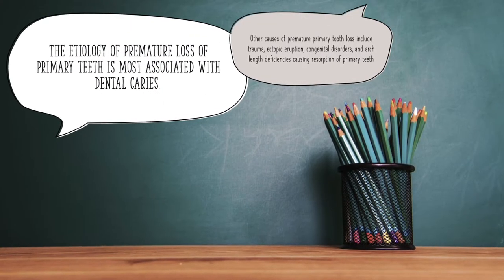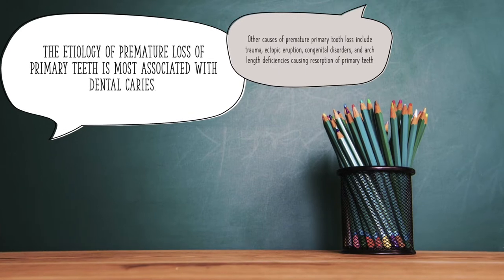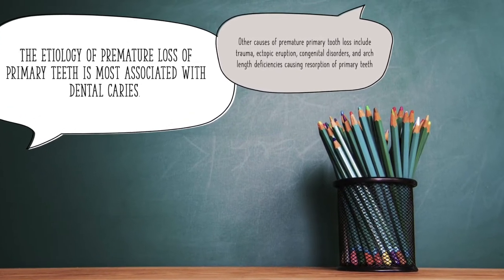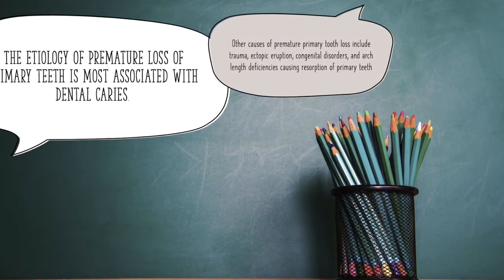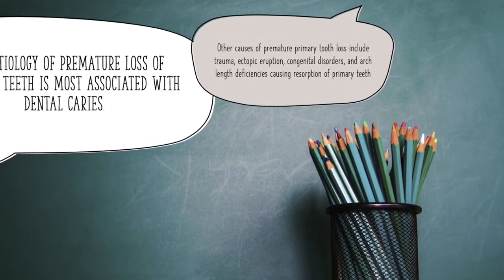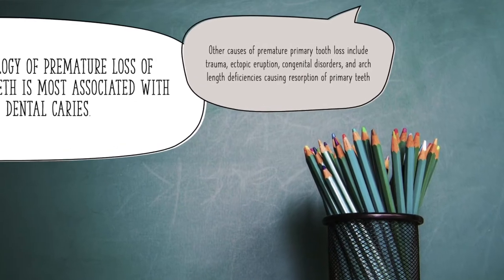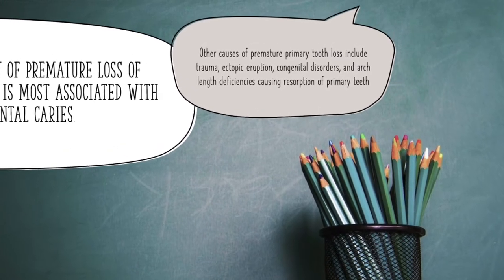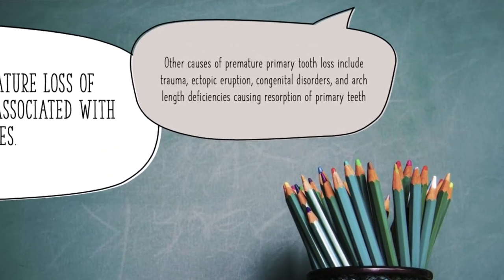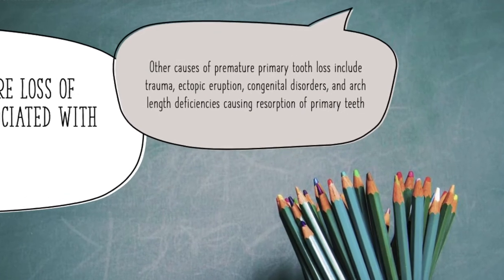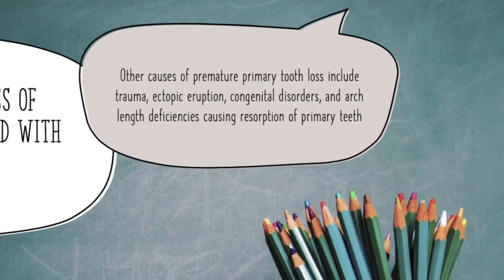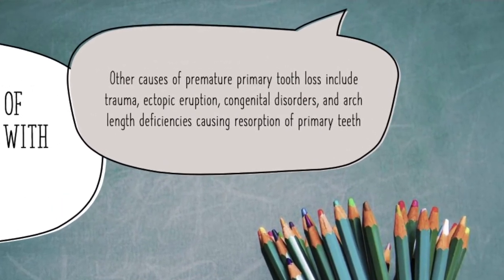The etiology of premature loss of primary teeth is most associated with dental caries. Other causes of premature primary tooth loss include trauma, ectopic eruption, congenital disorders, and arch length deficiencies causing resorption of primary teeth.